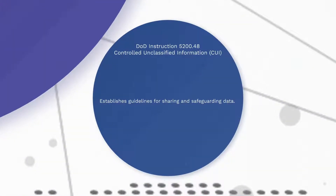Let's discuss DOD Instruction 5200.48, Controlled Unclassified Information, or CUI. This instruction establishes guidelines for sharing and safeguarding data. Controlled Unclassified Information may be transmitted electronically. CUI must be on approved secure communication systems or systems utilizing protective measures, such as public key infrastructure or transport layer security. Wireless transmissions should be avoided, especially when other options are available.